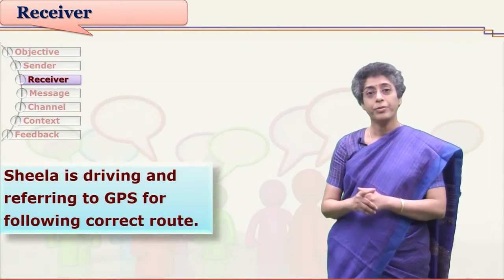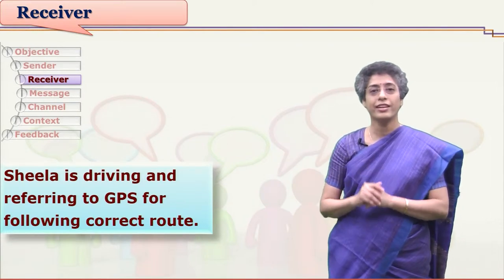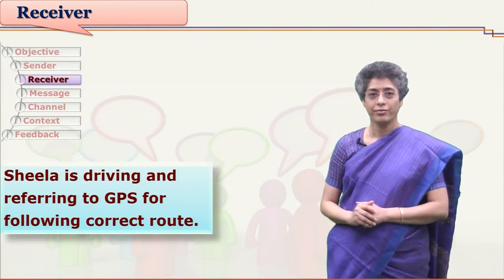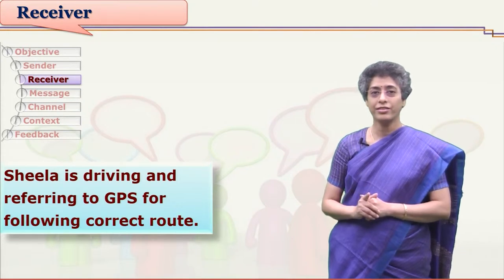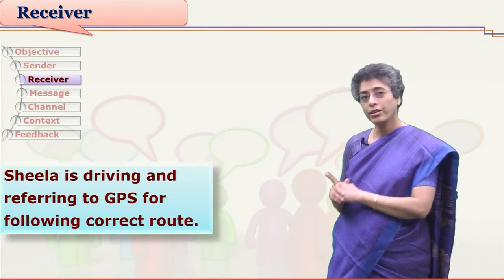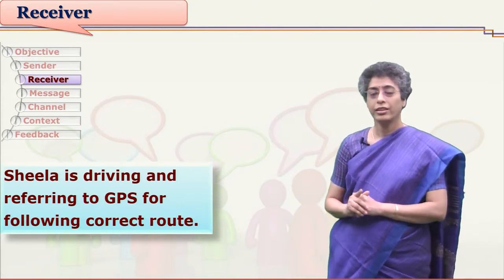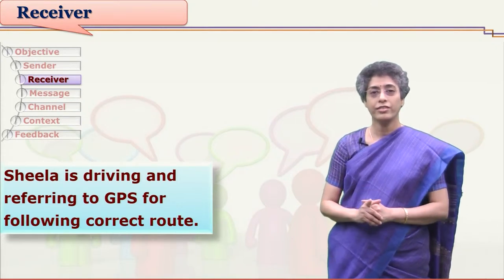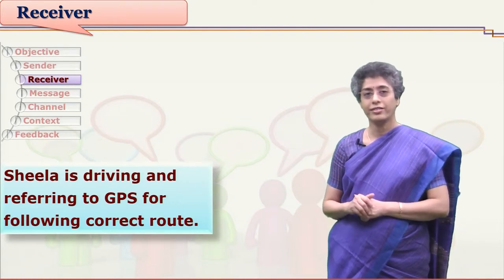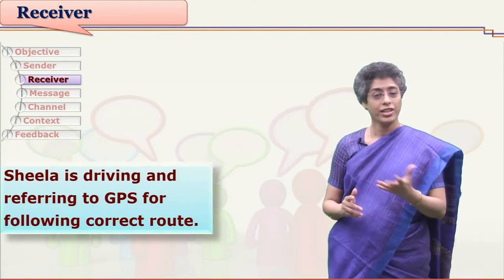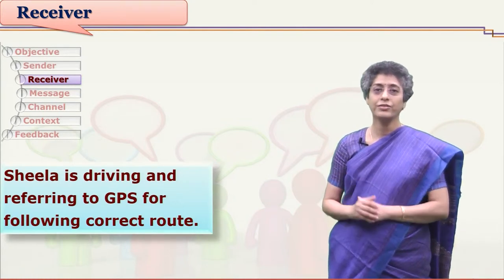that GPS system is guiding Sheila. So here, Sheila is not receiving messages from another human being — she is receiving messages from a system. Sheila is the receiver of this message.